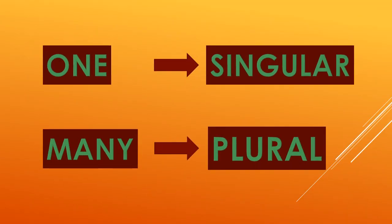Now let's come inside the chapter — singular and plural. See here: O-N-E, one. We call singular. One and singular mean the same. Singular means also one. From now onwards we won't say 'one', we will say 'singular'. Singular means only one. Next — M-A-N-Y, many. We call plural. From now onwards we won't say 'many', we will say 'plural'. Plural means many. Singular means only one, and plural means many. Now let's see with the help of examples.